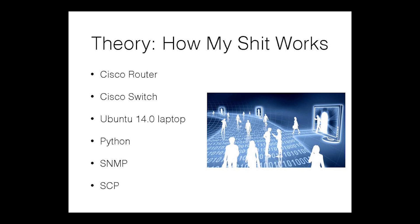The theory of how my system works — what I originally wanted to do was have routers and switches, a laptop, Python, SNMP, and SCP. Nice, clean, pretty. Turns out I don't know anybody that uses SNMP besides using GET — nobody I found was doing it with the triggers. I asked like a million people.